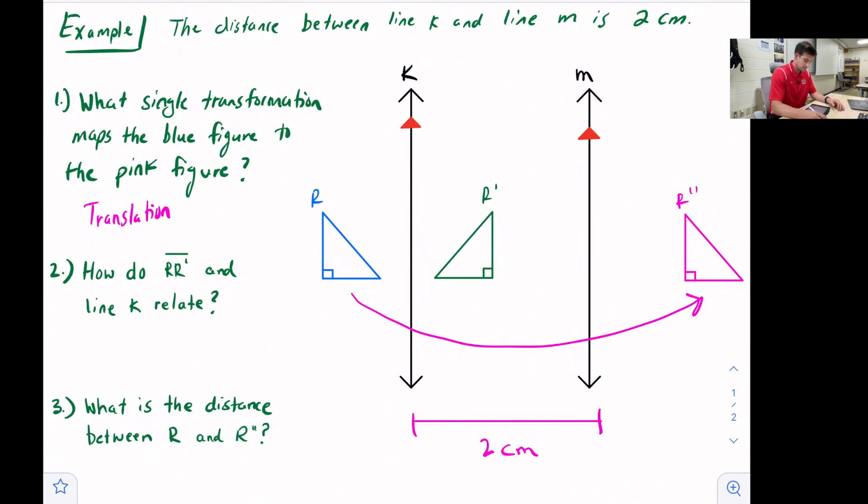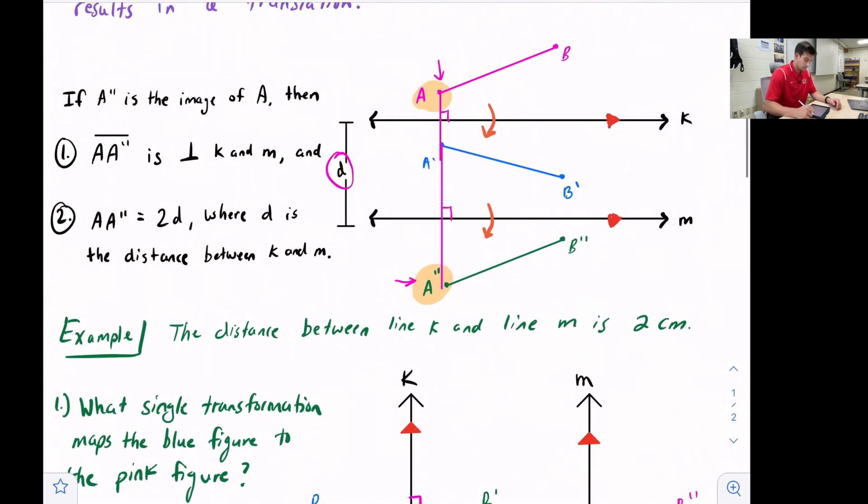Now it says, how do the line segment R R prime relate to line k? Well, these lines are perpendicular, and we saw that right up here in our theorem.